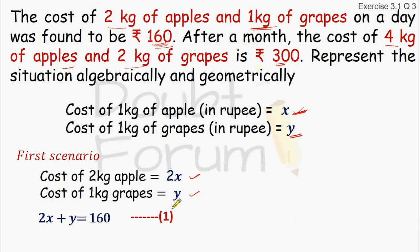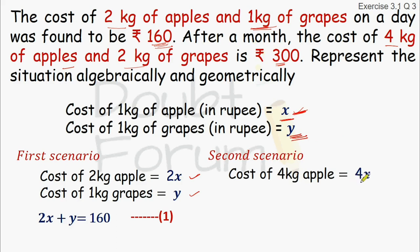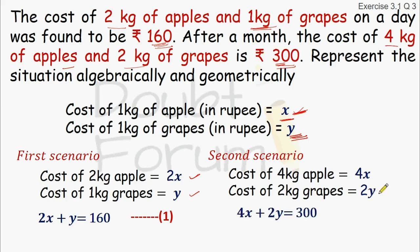Now moving on to the second scenario: the cost of 4 kg of apples is Rs. 4x, and 2 kg of grapes is Rs. 2y. So the total cost is 4x plus 2y equals Rs. 300. This is our equation number 2.